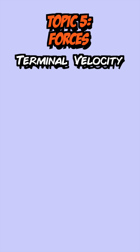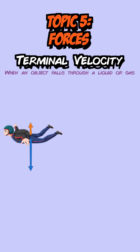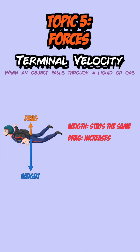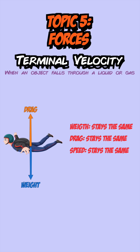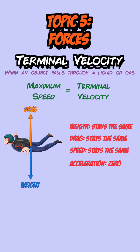Terminal velocity occurs when an object falls through a liquid or gas due to gravity. When a person falls, weight due to gravity stays constant while drag increases the further they fall. This causes their speed to increase until drag equals weight, at which point speed becomes constant and there's no acceleration — this is the terminal velocity.